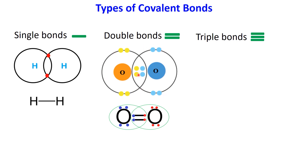A double covalent bond forms when two atoms share two pairs of electrons, with each atom contributing two electrons to the shared pairs. For example, in an oxygen molecule, O2, each oxygen atom shares two of its electrons with the other, resulting in a double bond.